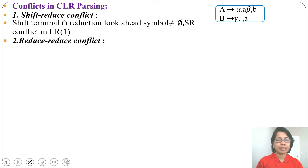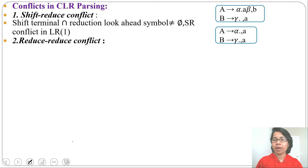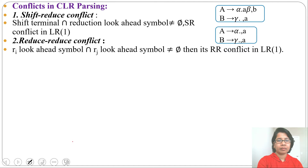A reduce-reduce conflict occurs when the parser is confused between more than one reduction. Suppose one state contains two LR1 items where both are reductions — the dot is at the end of both. We write each reduction in the lookahead column 'a'. If one state contains more than one reduction and their lookaheads are common, it is a reduce-reduce conflict. For CLR1, if the intersection of lookahead symbols is not equal to φ, then an RR conflict is present.